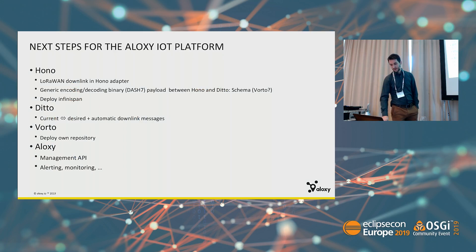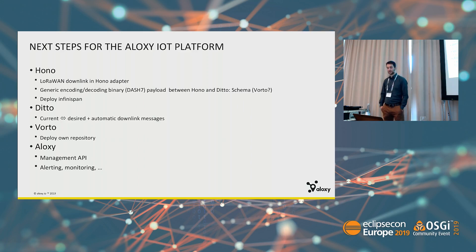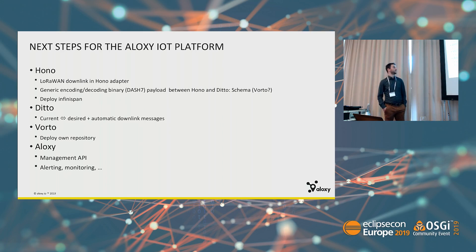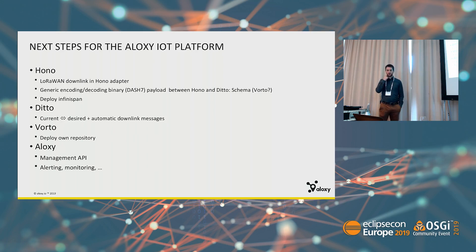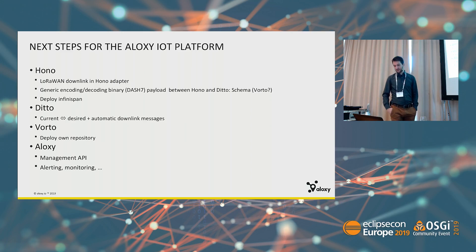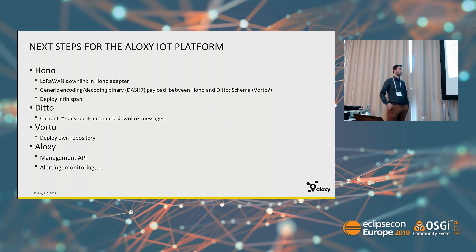Some next steps for the IoT platform and Eclipse IoT projects: For HONO, we'd like to implement the LoRa downlink adapter, normalize data within HONO so everything comes out the same way, and deploy Infinispan which is already in version one but not yet in our cluster. For Ditto, we want current and desired state so it automatically updates the device via a downlink command. For Vorto, we want to deploy our own repository — last week I actually deployed it — and we want more mapping and normalizing from Vorto. Internally, the managed API might be made open source depending on how generic we can make it, and we want more alerting and monitoring.